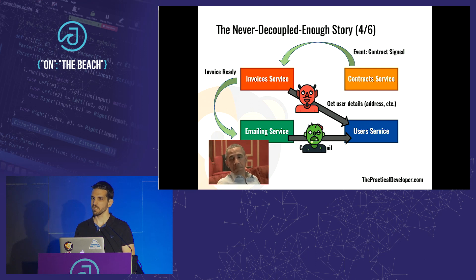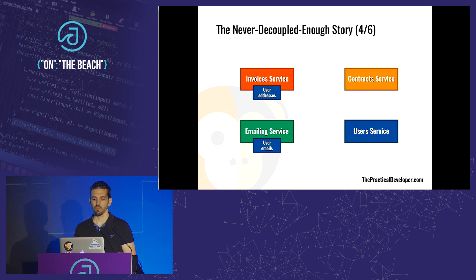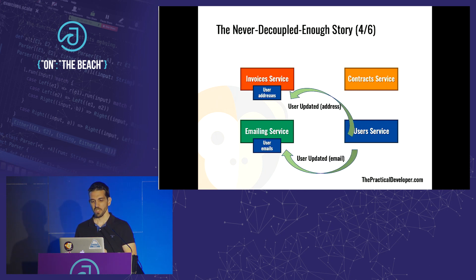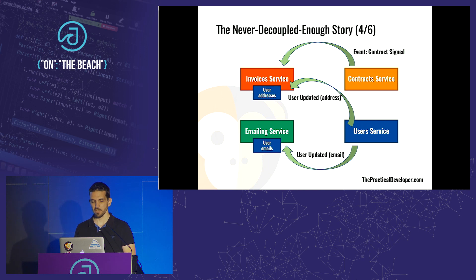Someone from the book reading cult in that meeting might say: don't do that because you still have synchronous calls. The fix: use domain-driven design — copy data from the user service into other services. Copy user addresses into the invoice service and user emails into the email service. Before this flow starts, the user service sends 'user updated' events to whoever is interested, you copy the data you need, and then the entire flow works without any synchronous interaction.